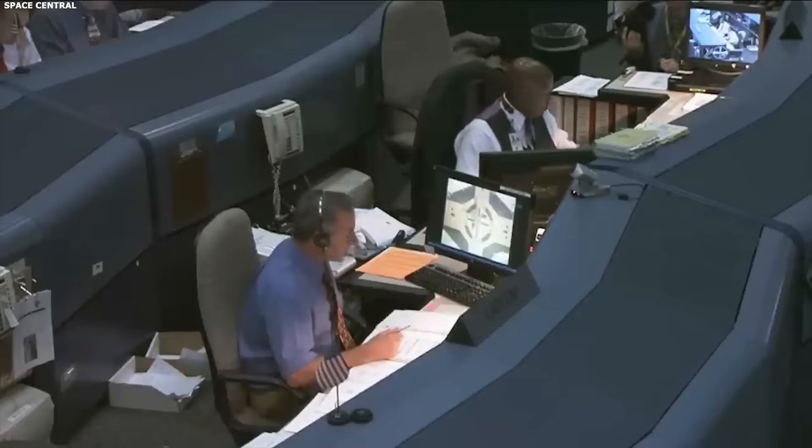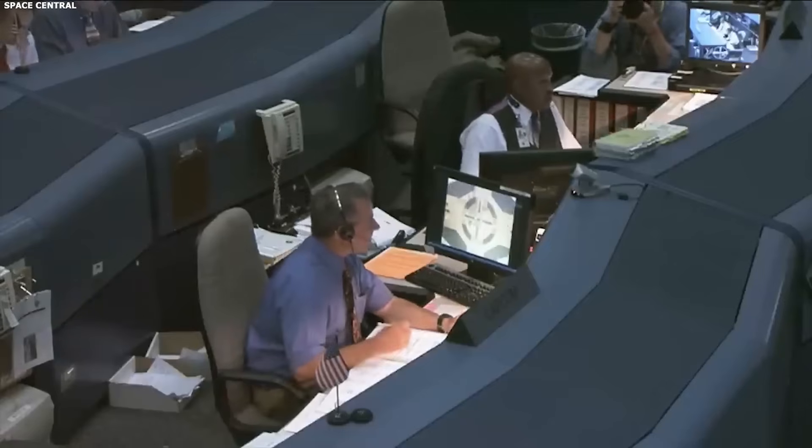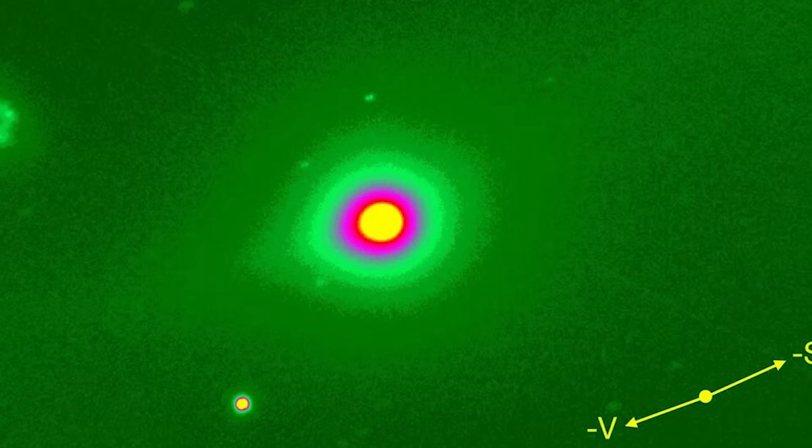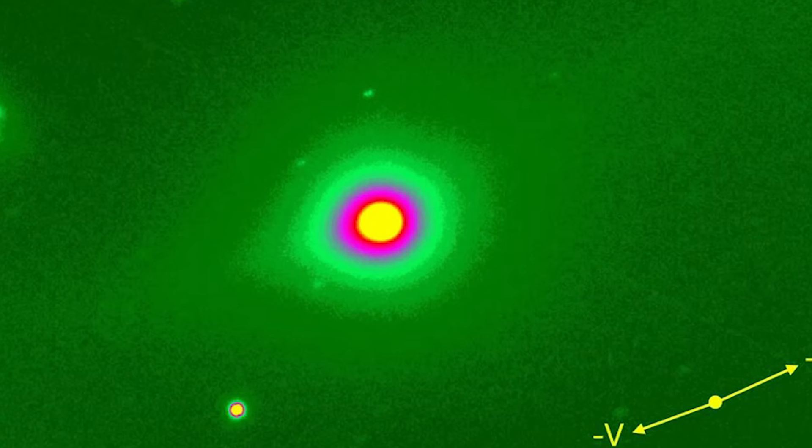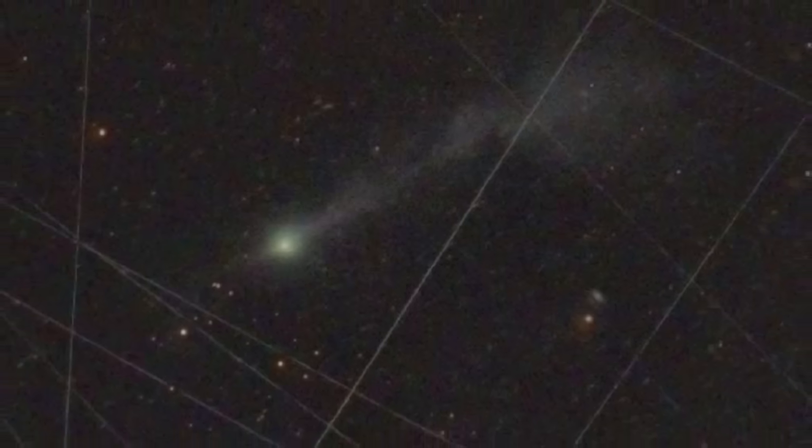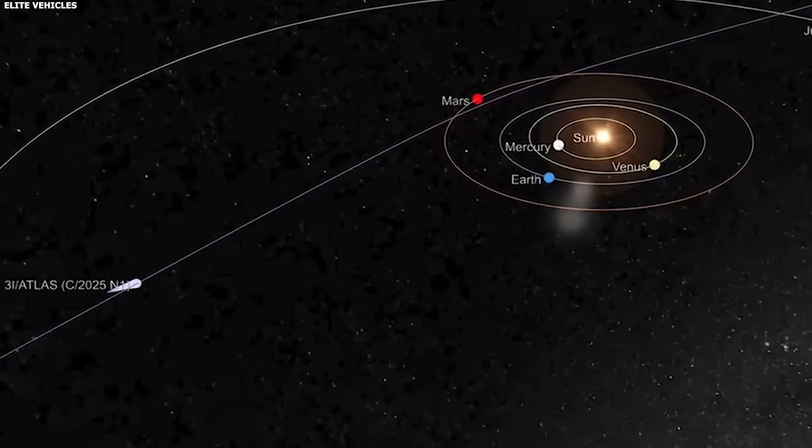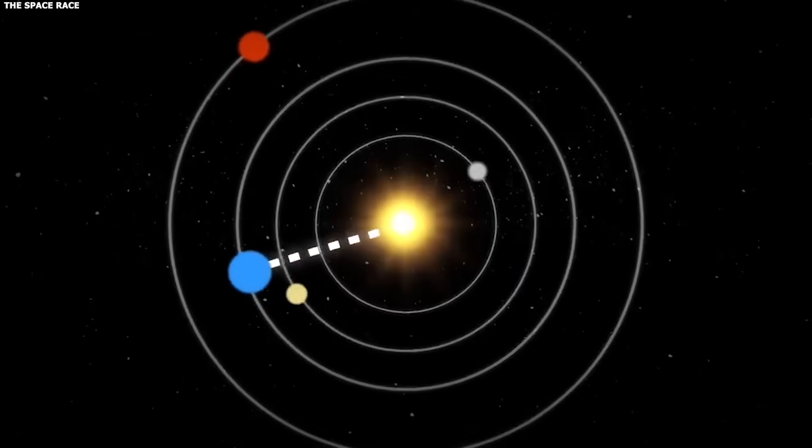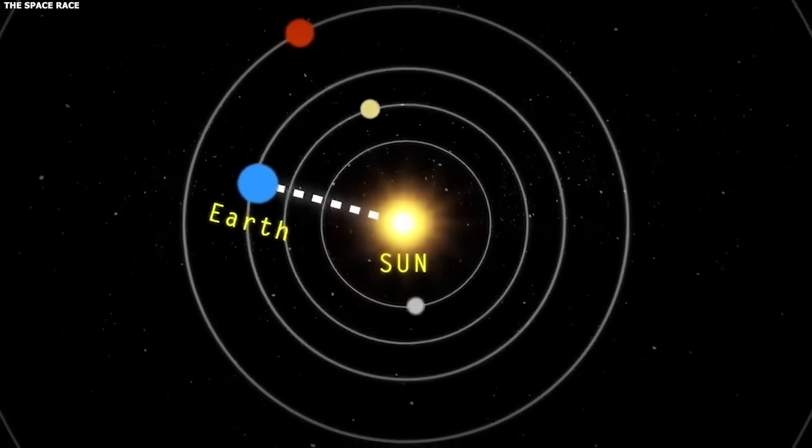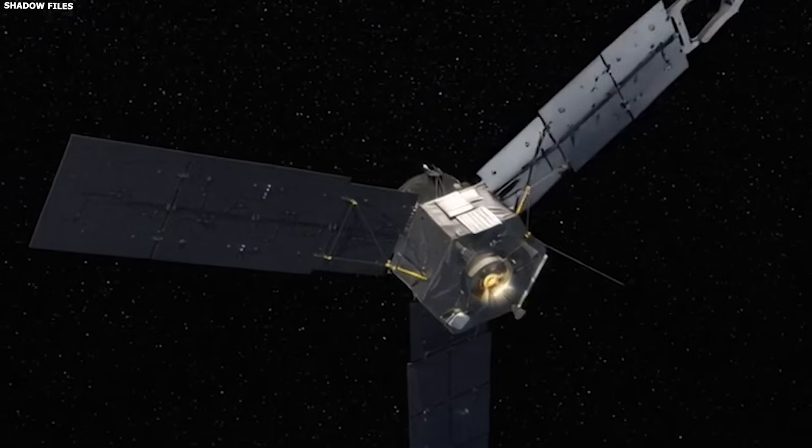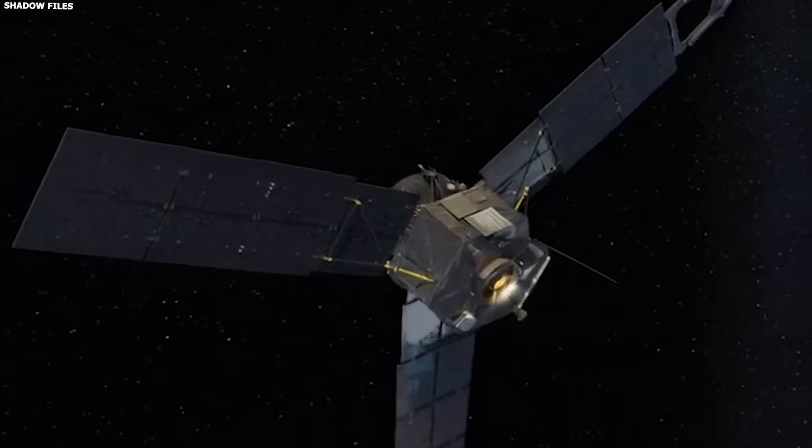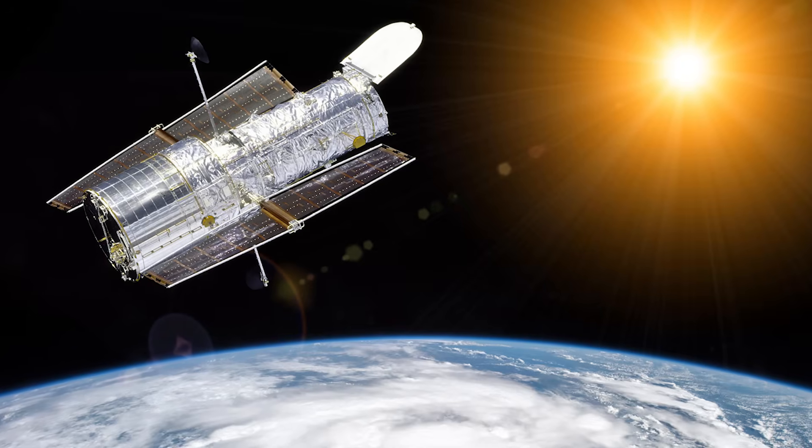The only way to find out is to get better data. The test. December 19th, 2025 is when 3I Atlas makes its closest approach to Earth. It'll be about 269 million kilometers away. That's still very far, but it's the closest it'll ever get. And December 19th happens to coincide with a new moon. That means the sky will be dark. No moonlight washing out faint details. It's the perfect observing night. Multiple telescopes are already scheduled to observe 3I Atlas. Hubble, Webb, ground-based observatories around the world. They'll be measuring everything they can.